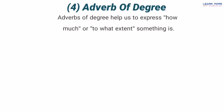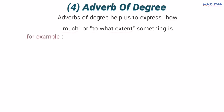Adverbs of degree help us to express how much or to what extent something is. Adverbs of degree humein yeh batate hain ke koi cheez kitni hai — how much — ya phir to what extent, ka matlab hai ke kis had tak, yani koi cheez kitni hai ya kis had tak hai. For example: 'The tea is hot' — chaaye garam hai. Is sentence mein 'tea' ek noun hai aur 'hot' ek adjective hai jo is noun tea ko modify kar raha hai ke woh tea kaisi hai — hot.